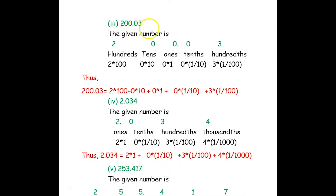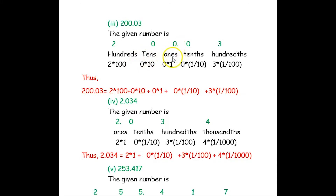The next number is 200.03. We write 200.03. The decimal point separates the integer part on the left from the decimal part on the right. Starting from the digit immediately next to the decimal point in the integer part, we call that ones, then tens, then hundreds.